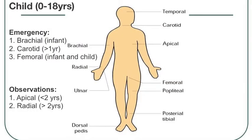This picture shows the ten most common sites to palpate a pulse in a child. A pulse can be found whenever an artery passes close to the skin and over a firm or bony surface of the body. In an emergency, in an infant, the brachial pulse would be used. In a child over one year, the carotid pulse would be the first choice. The femoral pulse for both infants and children can also be used in an emergency.